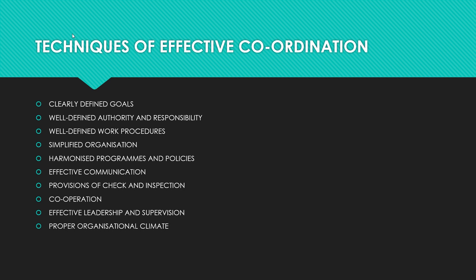Third point: well-defined work procedures — when work procedures are well defined and adhered to properly, they help achieve coordination very easily. Fourth point: simplified organization — coordination becomes easier when the organization structure is made simple, clearly laying down duties and responsibilities of various positions. Fifth point: harmonized programs and policies — to secure coordination, consistency of plans and policies between different sections must be maintained; all plans and policies must fit into the objectives of the organization.